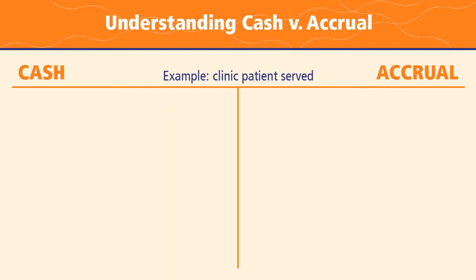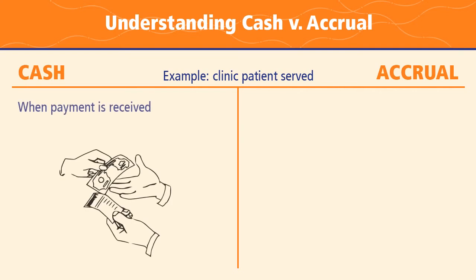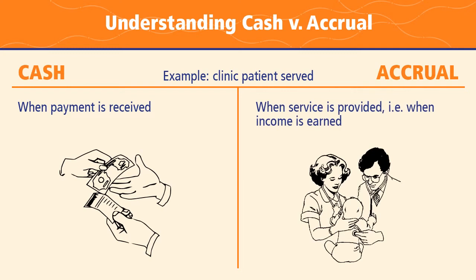Looking at a clinic patient is another way of thinking about when you record income under cash versus accrual. If a patient has a copay and pays the day they come in, that is recorded as cash at that time. If they don't pay until later, that debt is not recorded until the cash shows up. Under the accrual system, you book that income when the service is provided — when the income is earned — even if the copay or insurance payment doesn't come until later.